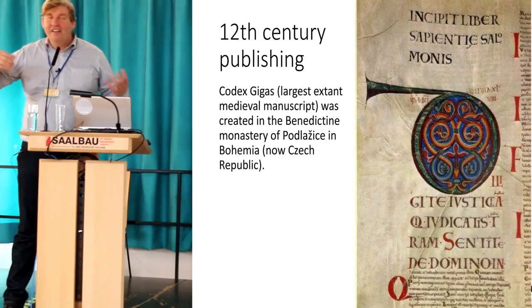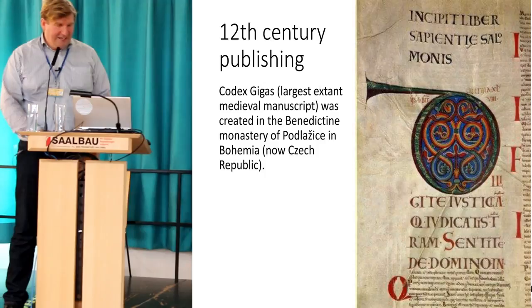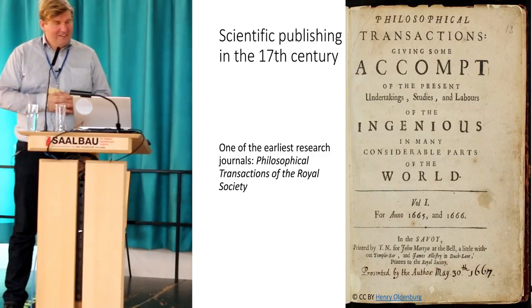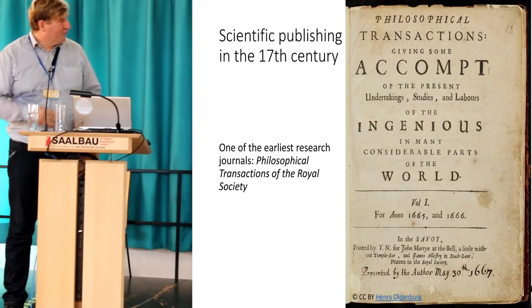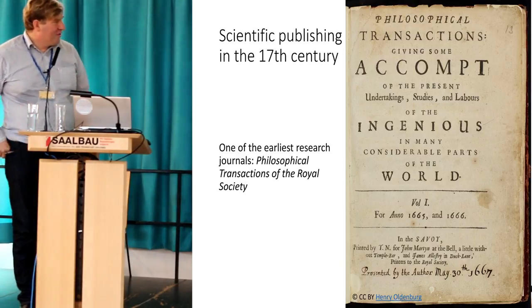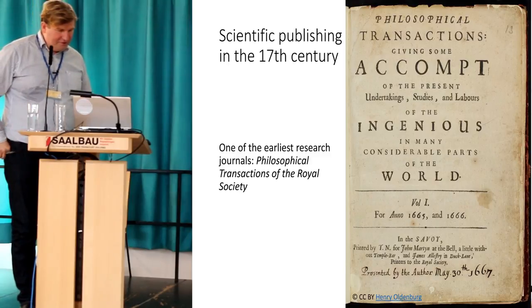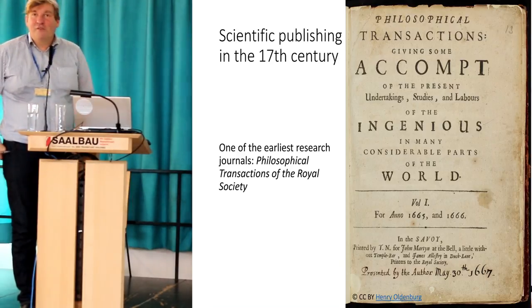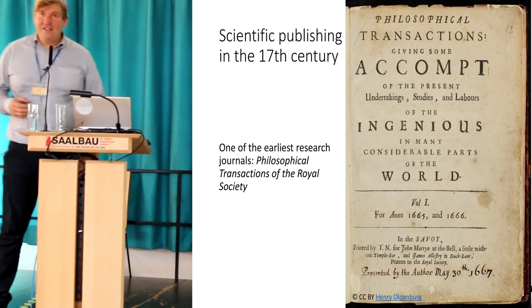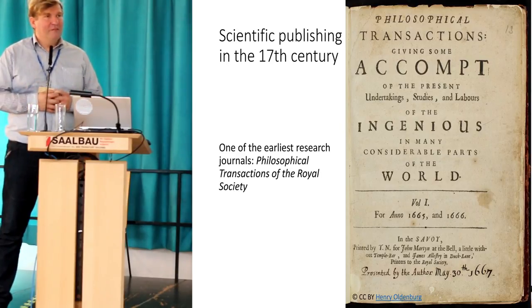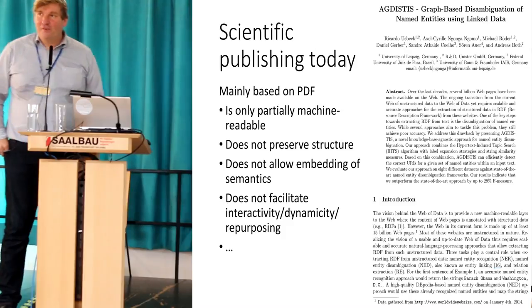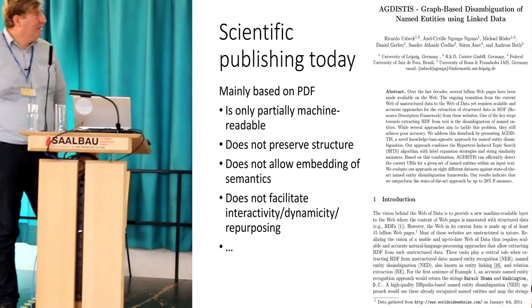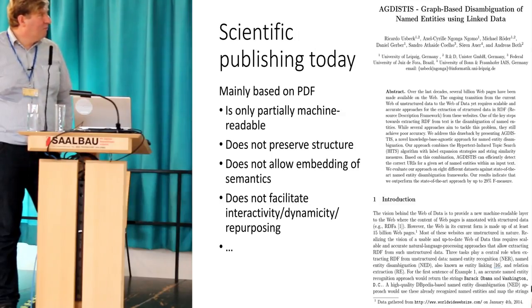In the 12th century, monks were basically transcribing and writing books by hand. Then of course we had the invention of printing. In the 17th century, scientific publishing started. This is the first copy of the Philosophical Transactions of the Royal Society from 1665 — one of the first scientific journals. Today we write articles and publish them in journals or conference proceedings, and most of the time they are PDFs. The problem with PDFs is they are only partially machine readable.